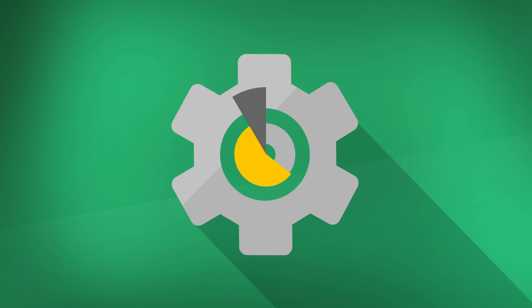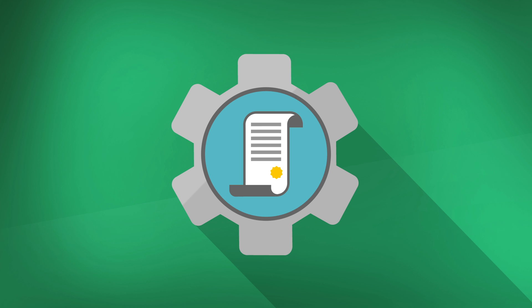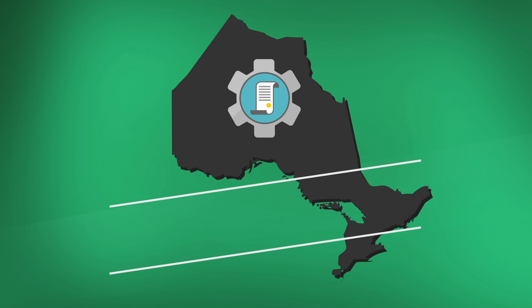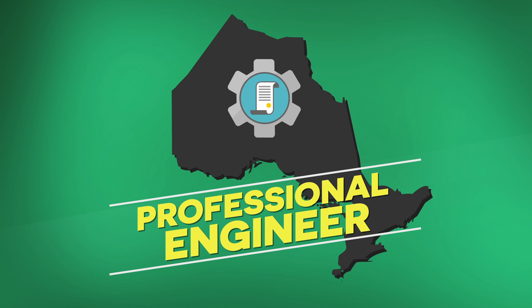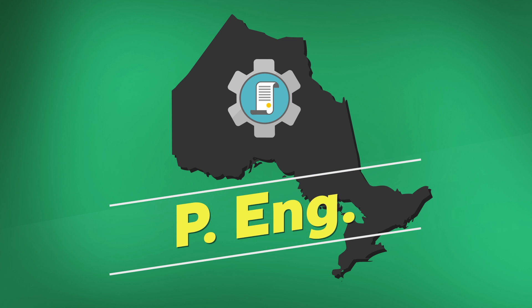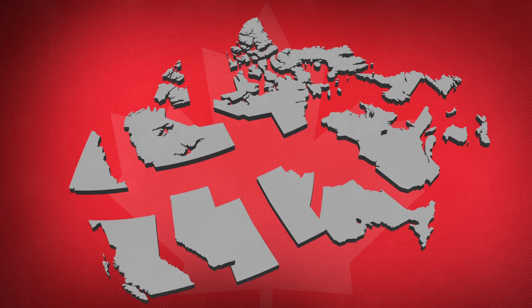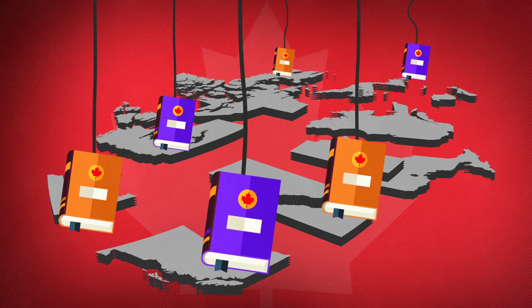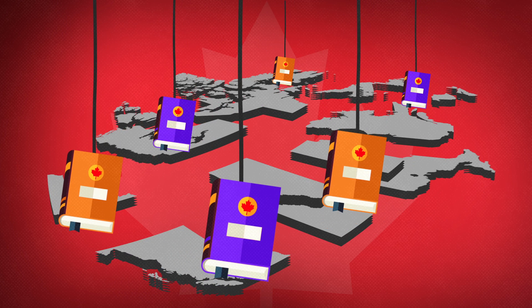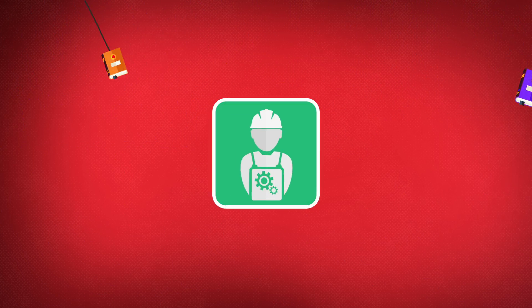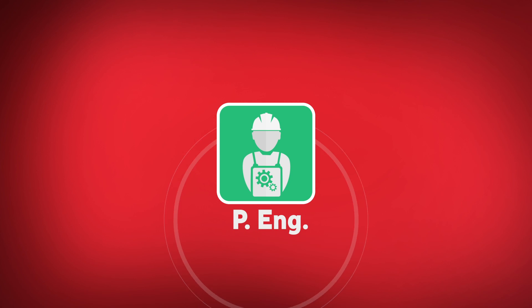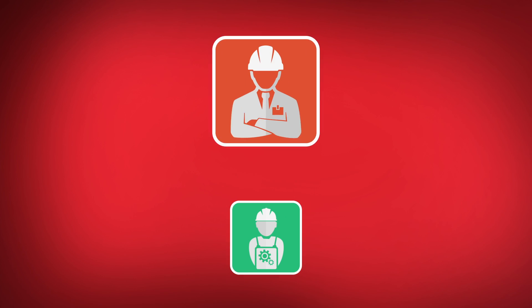At the beginning of this video we talked about the professional designation for engineers in Ontario — Professional Engineer, or P.Eng. You can't call yourself an engineer without this designation. In each province or territory in Canada, legislation defines what is meant by engineering work, and in order to perform engineering work you must hold the P.Eng designation or be working under a supervisor who holds it.